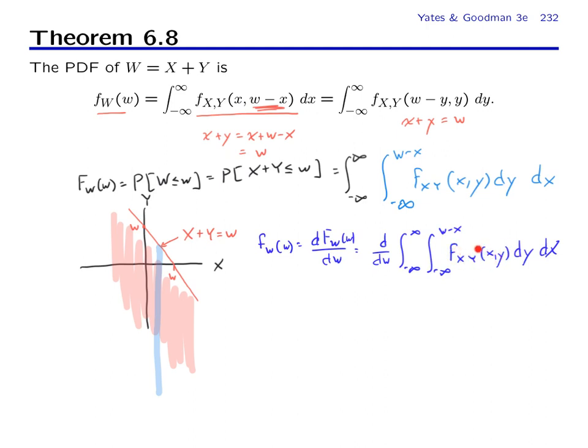And then when you take a derivative of this inner integral, in fact it's the function inside evaluated at the upper limit. And so what you obtain is equal to the integral from minus infinity to infinity of f of xy, where x and the y is evaluated at w minus x, this upper limit, and then dx.